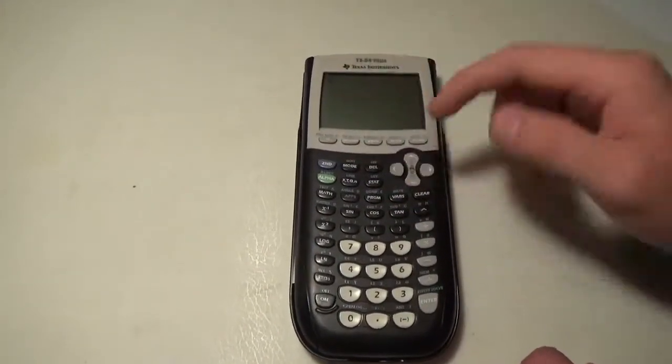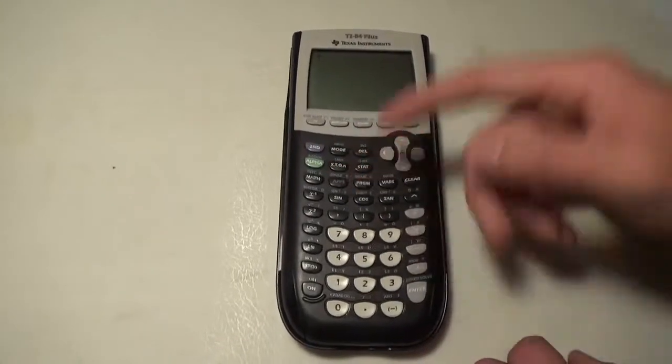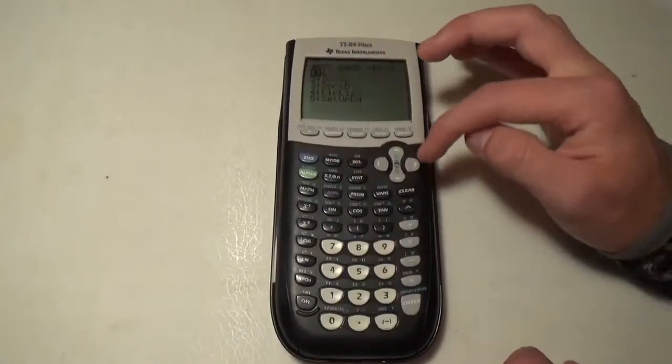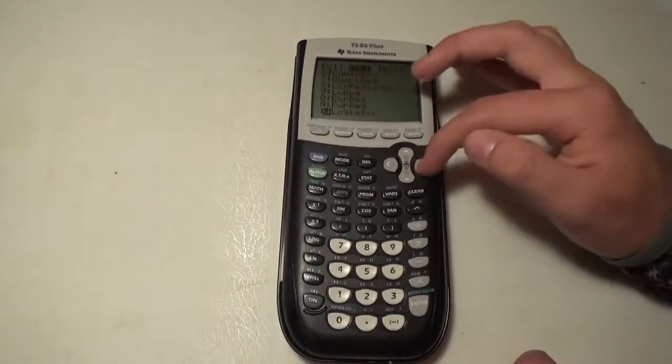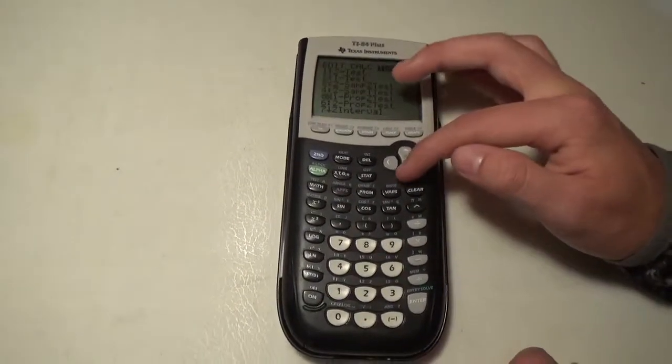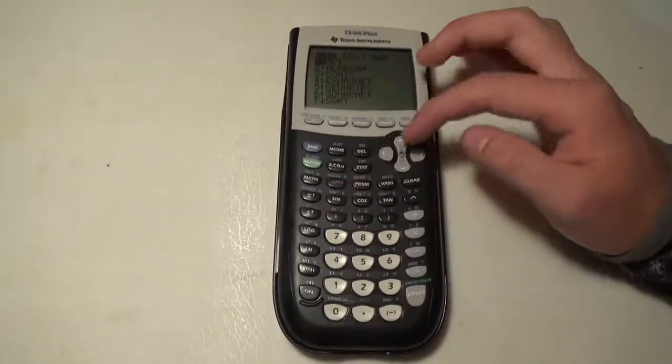Stat is all the statistics stuff, you can edit your lists here. Second mode is to quit and get out of a menu. Here you can find all your stats, the z test and t tests, all those kinds of statistics.